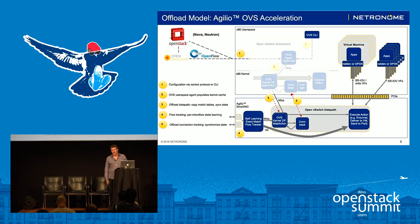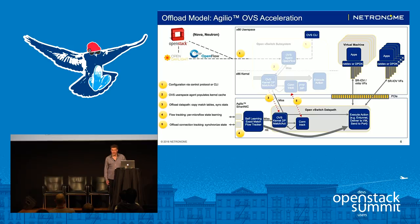This gives you the combination of features of SRIOV and virtual switching without needing an external physical switch. Furthermore, there's the option of using VirtIO to feed traffic to VMs, which is very useful for things like VM migration.